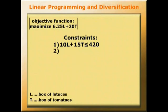We've got a space constraint, and the space for growing the tomatoes is double that for lettuces. So L plus 2T will have to be equal to or less than 50.